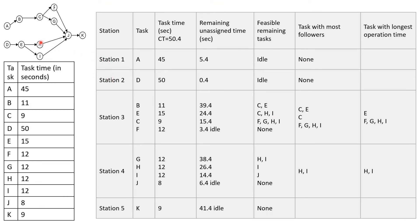Workstation 1: task A is assigned first, requiring 45 seconds. Since the cycle time is 50.4 seconds, subtracting 45 leaves 5.4 seconds — not enough to assign any other task. Moving to workstation 2: task D is assigned, requiring 50 seconds, leaving only 0.4 seconds of idle time. We cannot assign any further tasks to workstation 2.